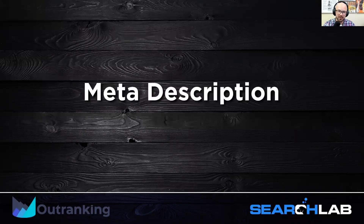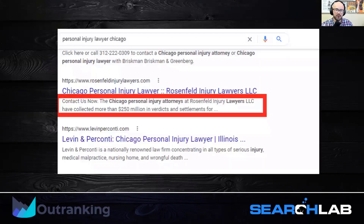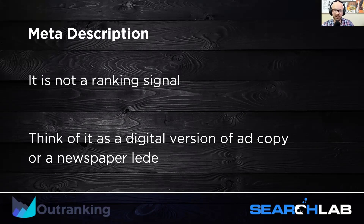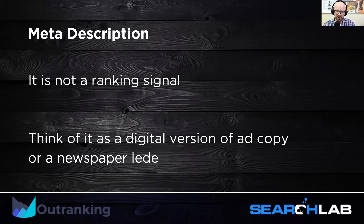Let's move on to meta descriptions. Your meta description is the bit of text that lives under your title tag — those blue links — in the SERP, describing what the page is all about. Google rewrites these around 70% of the time, but for the 30% that Google doesn't rewrite, it's worth getting right. It's not a ranking signal — meta descriptions are not a ranking signal, they're a user engagement indication. Think of your meta description as ad copy or a newspaper lead: it describes the who, what, where, when, and why, and inspires urgency and immediacy in the reader to read more.